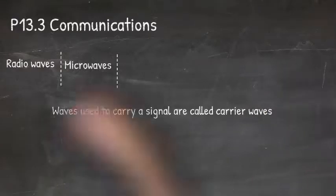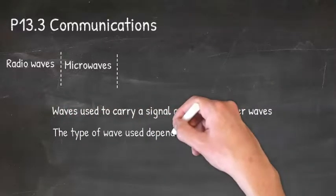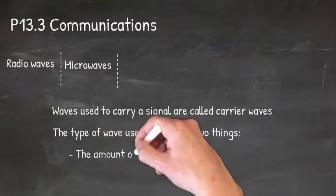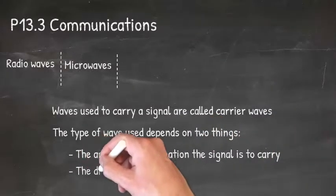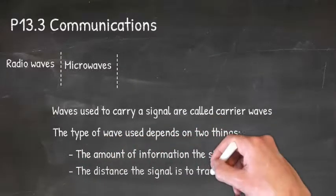The wave used to carry a signal is called a carrier wave. The type of wave used actually depends on two things: the amount of information the signal is to carry and the distance the signal is to travel.